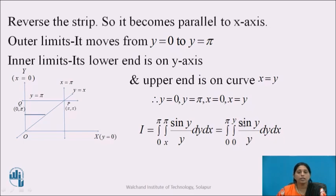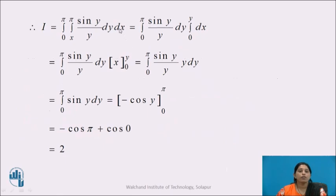Here, the inner integral is having the limits of x, so the first integration will be with respect to x. When we integrate with respect to x first, we treat y as constant. So this integral — integration from 0 to π, integration from x to π, sin(y)/y dy dx — can be written as integration from 0 to π, sin(y)/y dy, into integration from 0 to y, dx. We know that the integration of dx is x, with the limits 0 to y, which gives us the integral as integration from 0 to π, sin(y)/y · y dy.